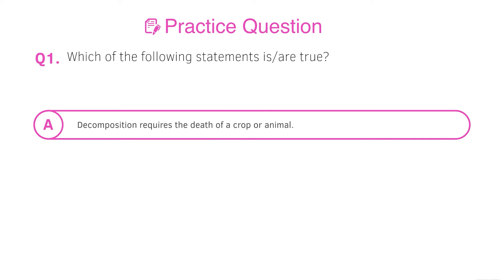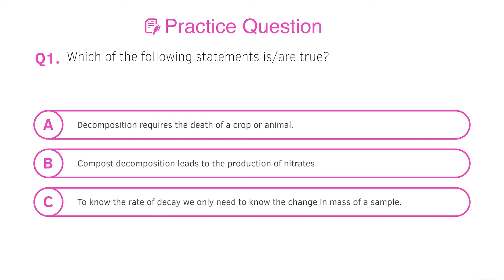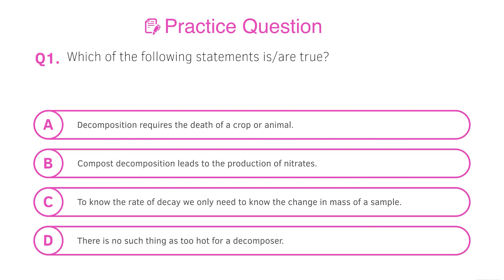Now let's have a look at some practice questions. I'll read through these statements — give the video a pause, have a go, and we'll go through the answers. A: decomposition requires the death of a crop or animal. B: compost decomposition leads to the production of nitrates. C: to know the rate of decay, we only need to know the change in mass of the sample. D: there is no such thing as too hot for a decomposer.